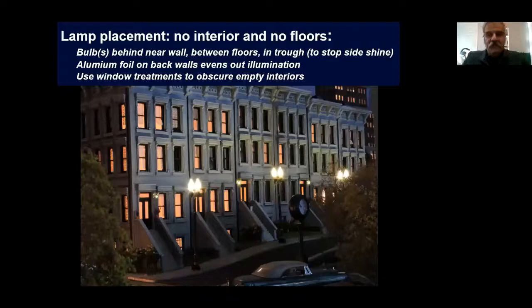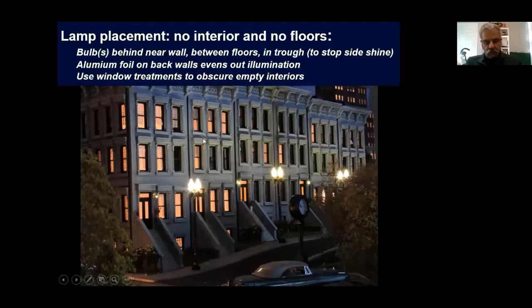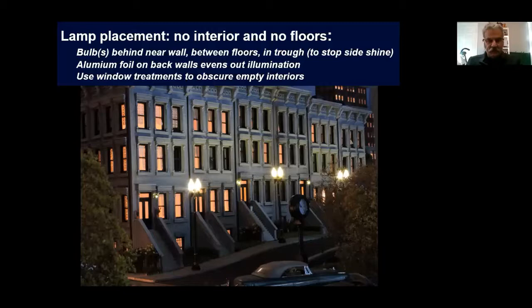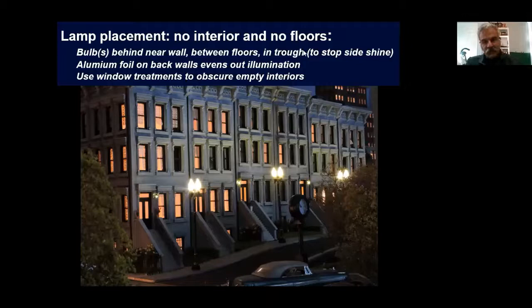Now let's get on to lamp placement. I'll start with buildings that have no interior and no floors — ones toward the background. First, place the bulbs behind the near wall, between the floors, and put them in a trough of aluminum foil. What you're trying to do is stop side shine — light going laterally outward where you can see the bulb. I put aluminum foil on the back walls to even out the illumination. Sometimes a light misting of tan paint looks a little more realistic. Finally, you want to use window treatments to obscure the empty interior — avoid that condemned-property look.